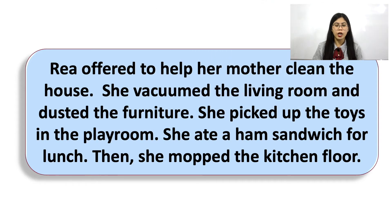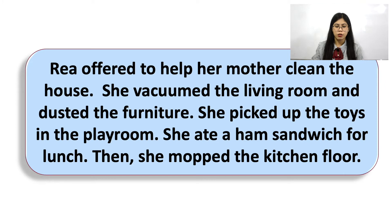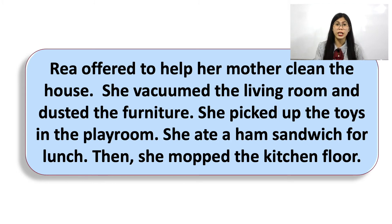Next example: 'Raya offered to help her mother clean the house. She vacuumed the living room and dusted the furniture. She picked up the toys in the playground. She ate a ham sandwich for lunch. Then she mopped the kitchen floor.' Can you identify which of the supporting details does not exhibit unity? The sentence 'She ate a ham sandwich for lunch' doesn't show unity because it is not related to the main idea — Raya offering to help her mother clean the house. Eating a ham sandwich has nothing to do with cleaning the house.